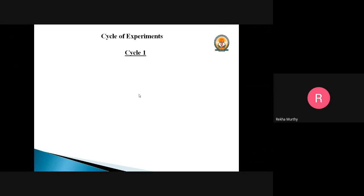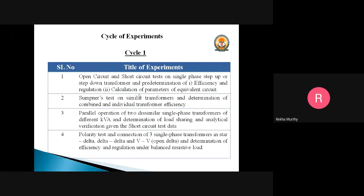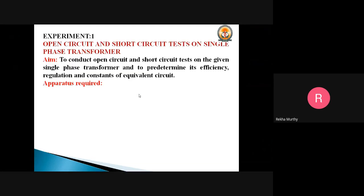Now let's move on with the cycle of experiments. The first experiment I'm going to conduct is the open circuit and short circuit test on a single phase step-up or step-down transformer, and predetermination of efficiency and regulation and the calculation of parameters of an equivalent circuit. The first four experiments will be related with the transformer itself. The aim of this experiment is to conduct the open circuit and short circuit tests on a given single phase transformer and to predetermine its efficiency, regulation, and constants of the equivalent circuit.